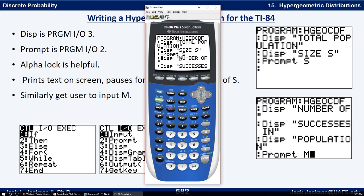So I can type two, prompt, and then S is alpha and then the S there. And of course enter will take us to the next line. Now what that does is when you run the program, it's going to type on the screen total population on one line. The next line is going to type size S. And the next line when you run it, it's going to come up and say S question mark. And it's going to pause there and wait for the user to put in the value of S that is required.